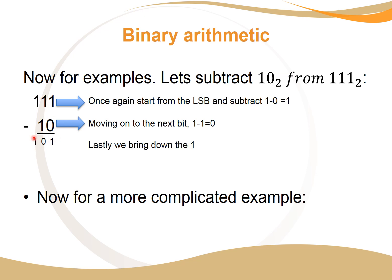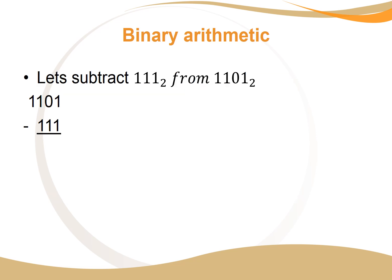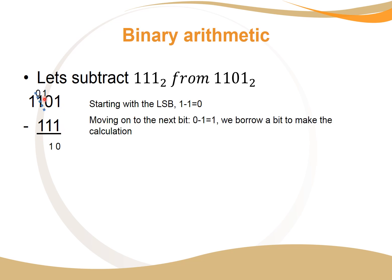Moving on to a more involved example: subtracting 1111 from 11101 in binary. We write it down and solve the least significant bit — one minus one is zero. But then we have zero minus one, which we can't do, so we have to borrow a bit from the following bit, just as we do in decimal — cross it out, write a zero, and carry over the borrowed bit.